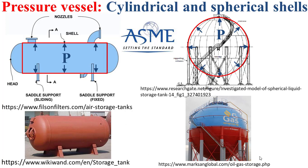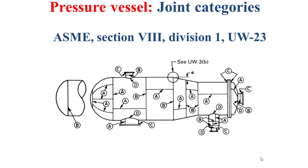Based on the American calculation code ASME — the American Society of Mechanical Engineers — it is important to note that welded joints in pressure vessels present four categories: category A, category B, category C, and category D, based on the figure you see in the slide.